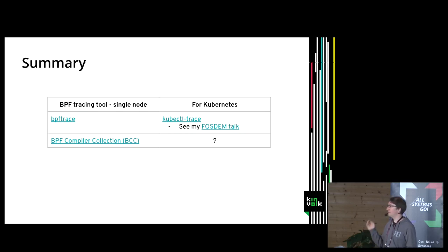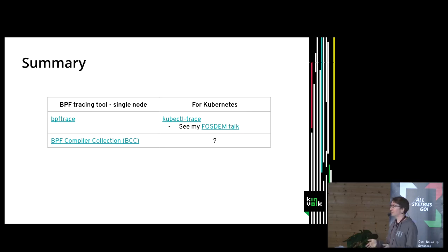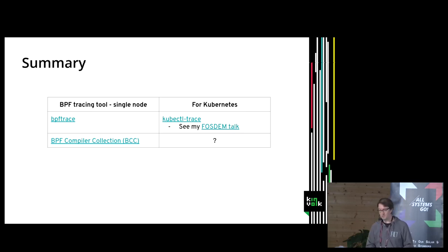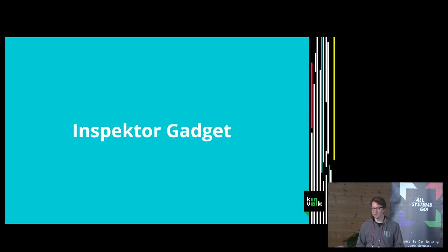As a summary: I have talked about BPFtrace, which you can run on a single node; about kubectl-trace, which runs at the Kubernetes level; and about BCC. The next part of the talk is what we can do with BCC to run on Kubernetes — and I guess you have guessed — that is Inspector Gadget.